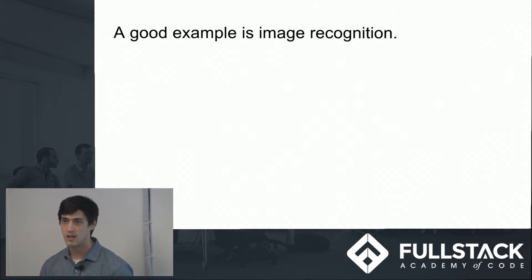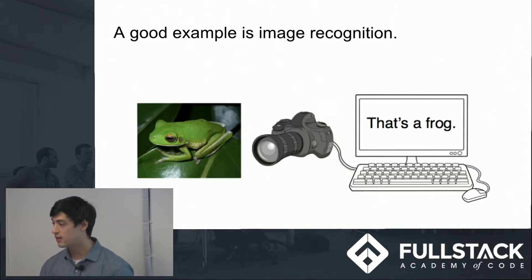Image recognition is a great example of what a neural network can accomplish. Image recognition being simply a computer looking at an image of a frog saying, yeah, that's an image of a frog.